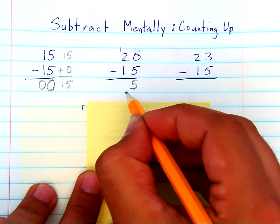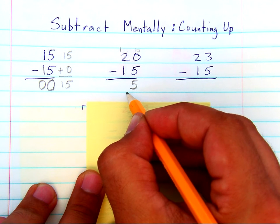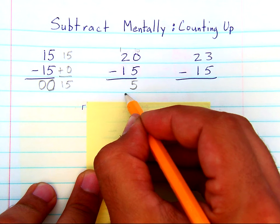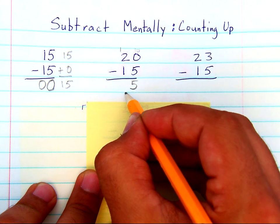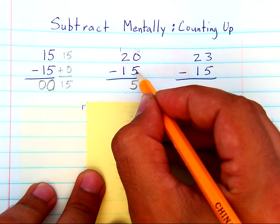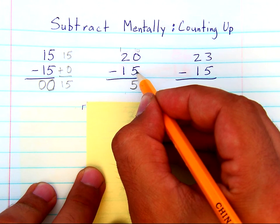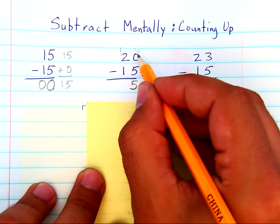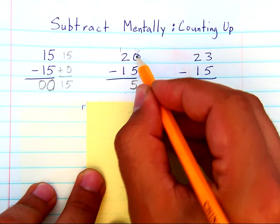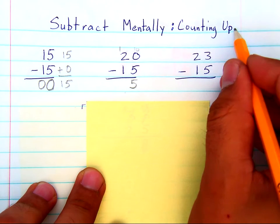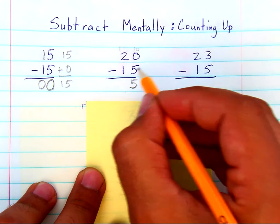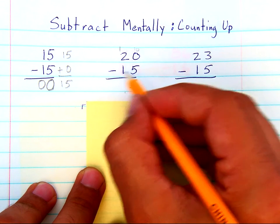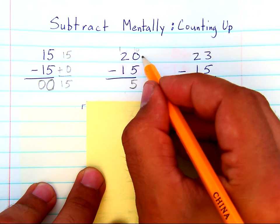That process is important to build the standard algorithm skill, but we should also be developing a mental ability to see numbers and know that fifteen is five less than twenty. One way to prove that is by counting up from fifteen by fives — from fifteen to twenty.